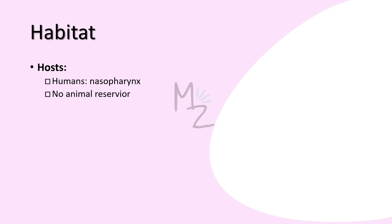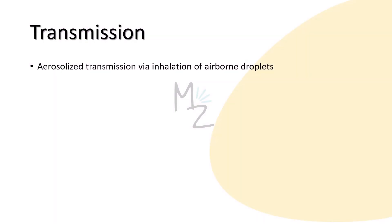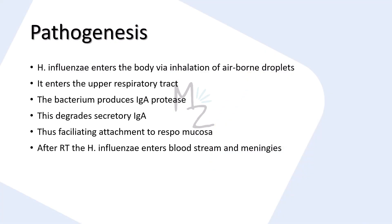Habitat and Hosts: Human beings are its host and it is specifically found in the nasopharynx. There is no animal reservoir. Transmission occurs by the inhalation of airborne droplets into the respiratory tract — we can term this as aerosolized transmission.